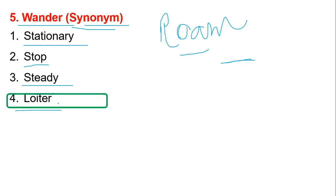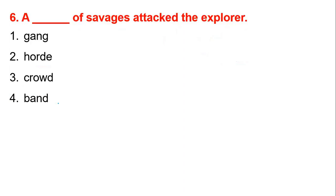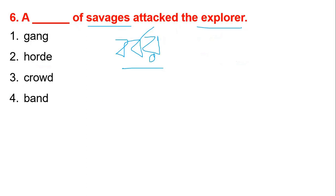Option number four — 'a dash of savage attack the explorer'. The word 'explorer' means the other. The related word here is 'gang' or 'crowd'.